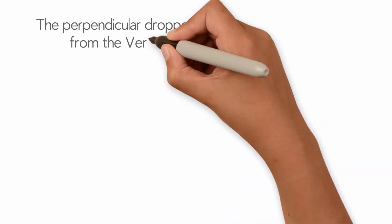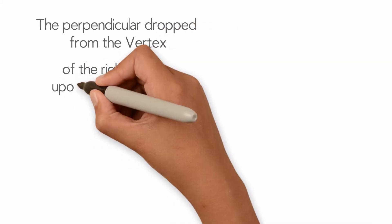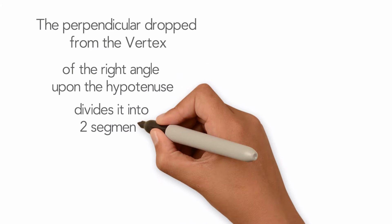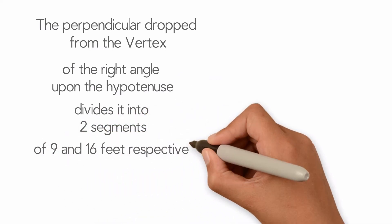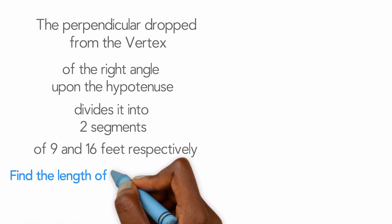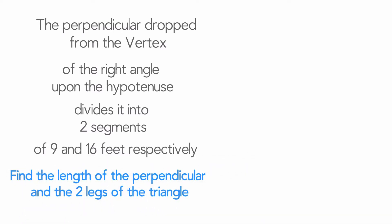The perpendicular dropped from the vertex of the right angle upon the hypotenuse divides it into two segments of 9 and 16 feet respectively. Find the length of the perpendicular and the two legs of the triangle.